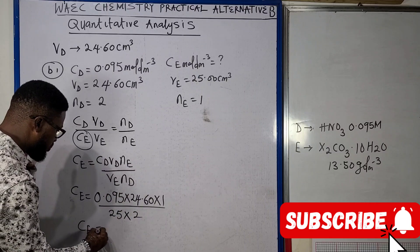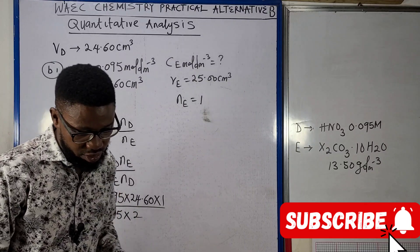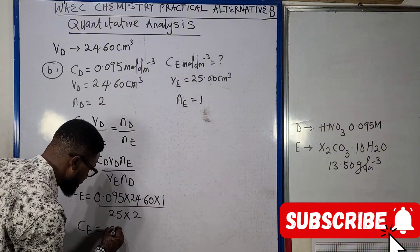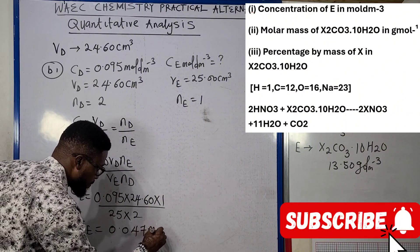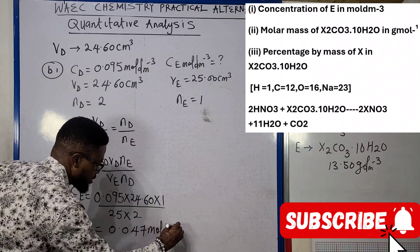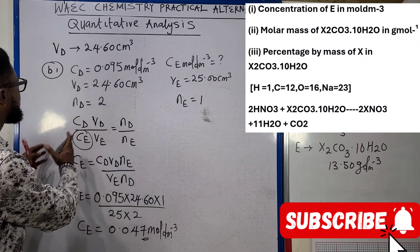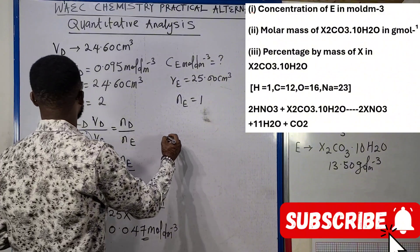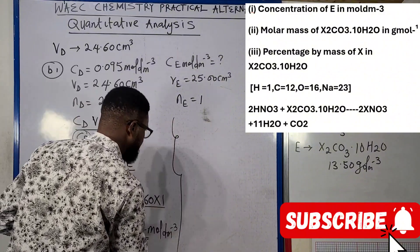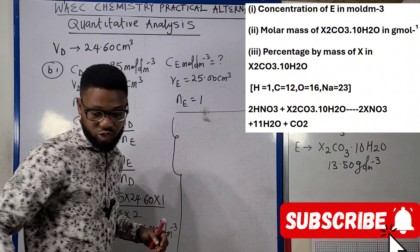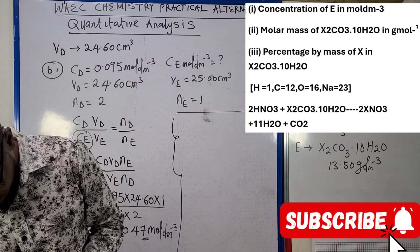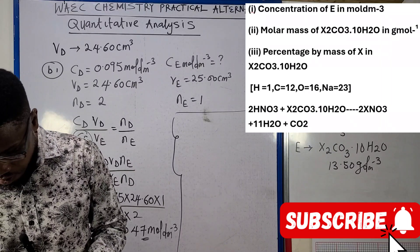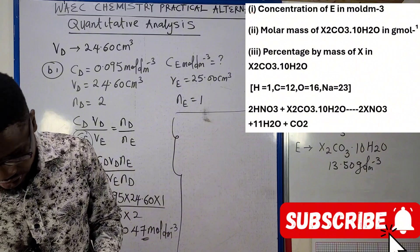CE here, if we compute this from our calculator, we're going to get 0.047 mole per dm³. So that's B1. Let's move to B2.